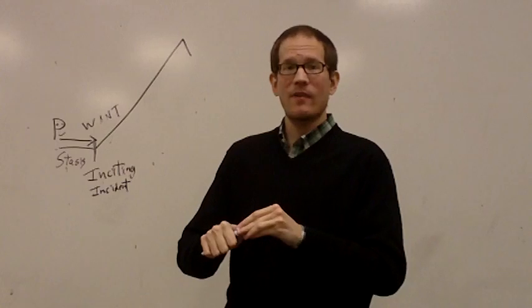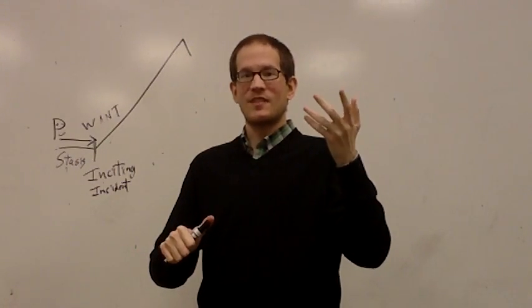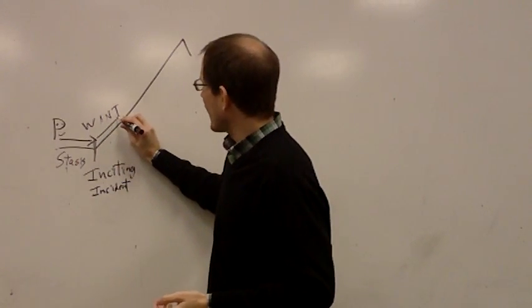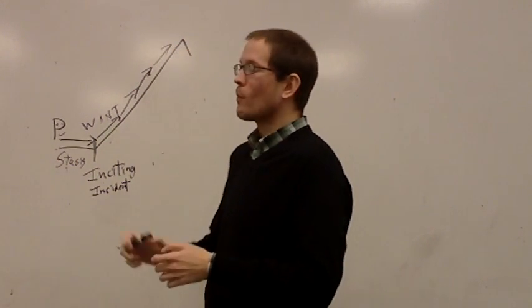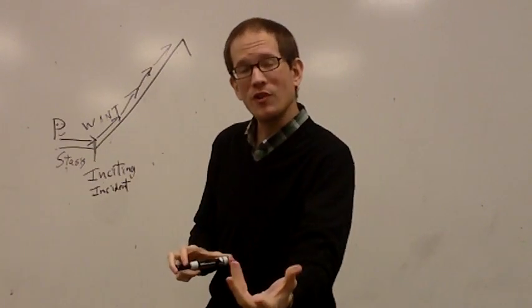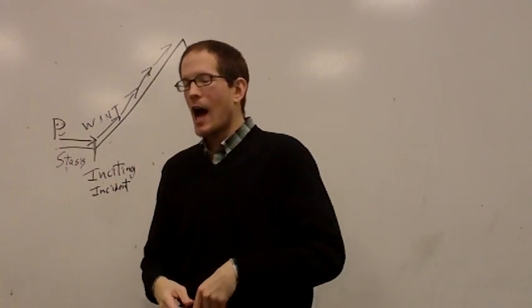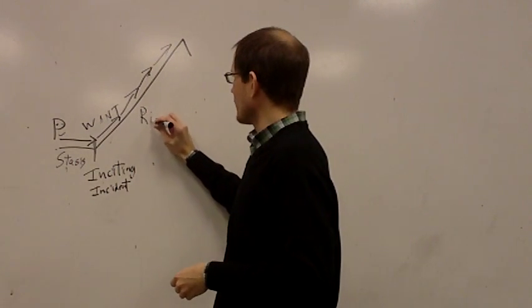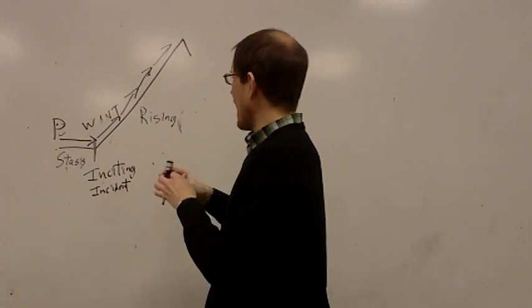Now that the protagonist wants something, they've got to try and get it. Because in a good play or a good movie, that's not easy. If it were easy, there'd be no conflict. This is what we call rising action. The protagonist has to work harder and harder and come up against more and more obstacles as they try to get that thing. And every step the character takes forward to try and get that thing, a new obstacle shows up. And that's what makes it interesting. We call that the rising action. And that makes up the majority of the action in the play.